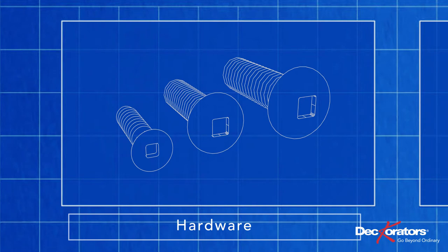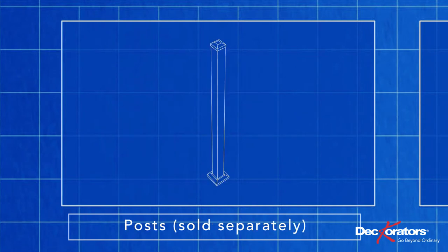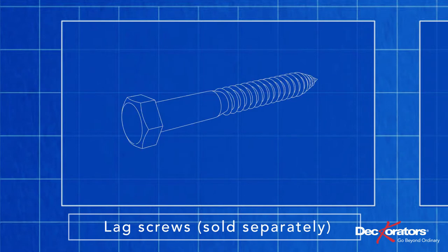You will also need to purchase posts, get one more than the number of railing sections, and lag screws, four for each post. Be sure they are 5 sixteenths by 4 inches or longer.